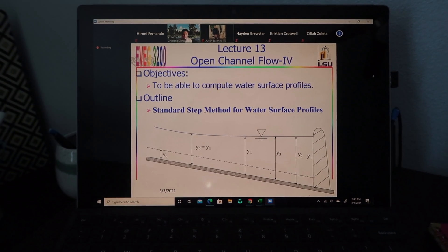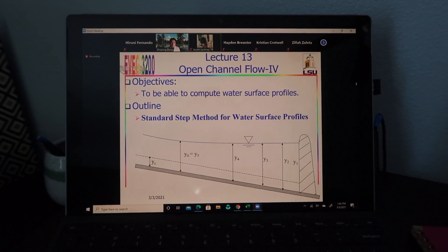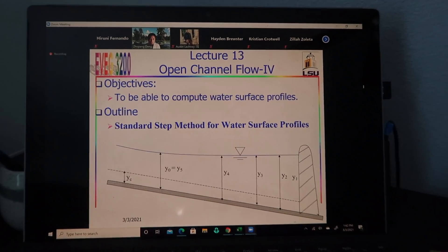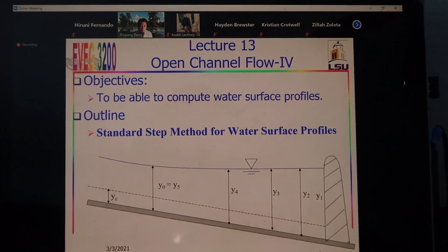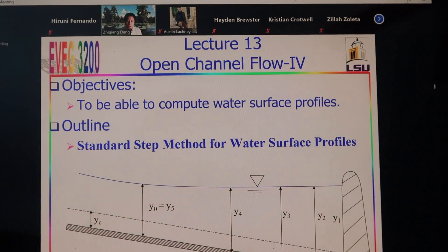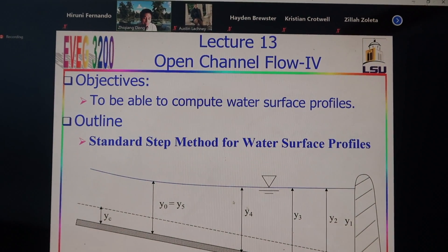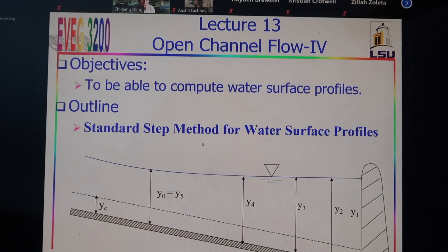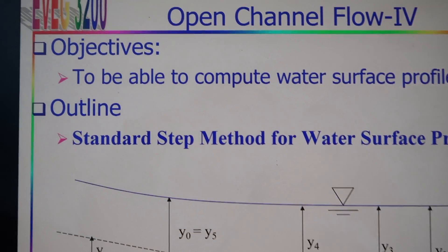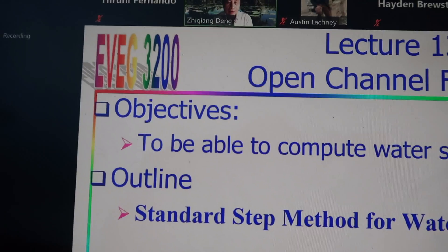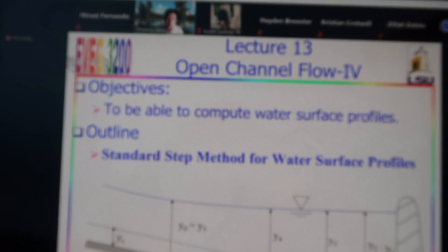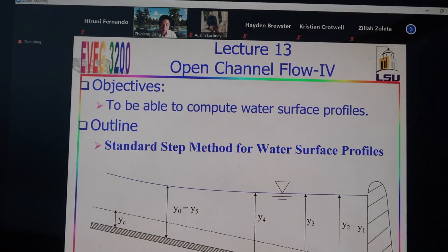I'll look at you. There are different methods available for the software for our competition. One of the two simple and easy methods in common use is called the standard step method. Now we are going to first introduce the standard step method. Now we will have to add to that for short iteration. This is the general method.